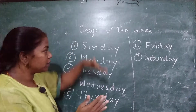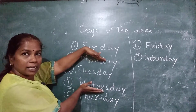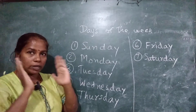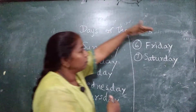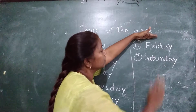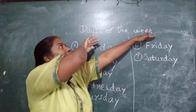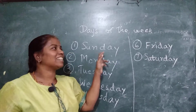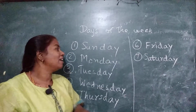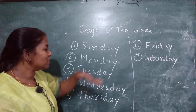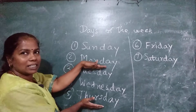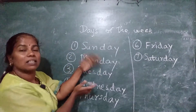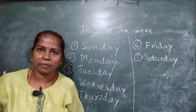Now between — what comes between Monday and Wednesday? Tuesday. Got it? What comes between Friday and Sunday? Saturday. What comes between Tuesday and Thursday? Wednesday. Understood?